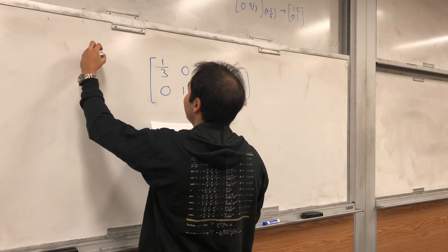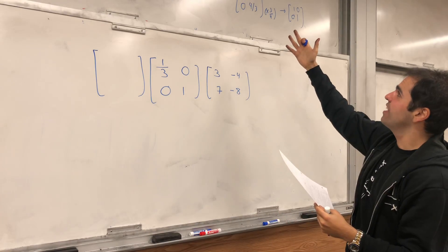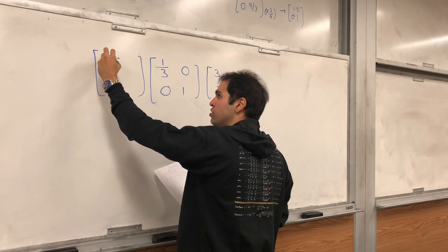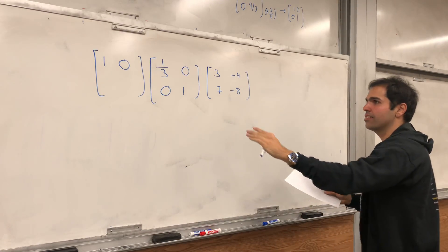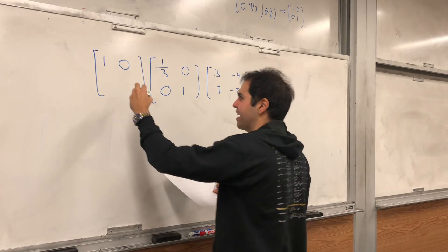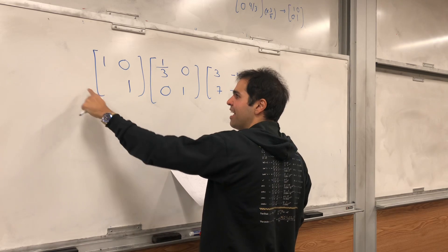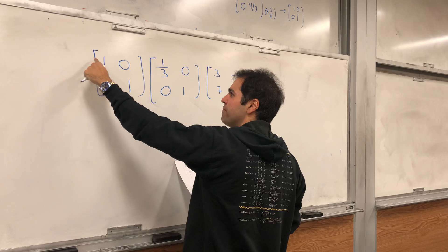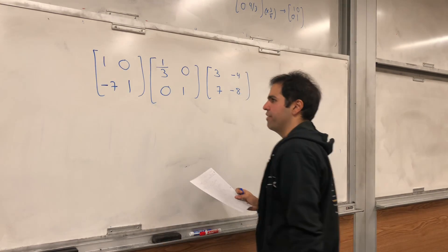Then, the next thing we did, we added minus 7 times the first row to the second row. So, the first row is unchanged, so it becomes like the identity matrix. And to say we add minus 7 times the first row to the second row, it means this is 1, and then because we add the minus 7 times the first row to the second row, this entry is minus 7.